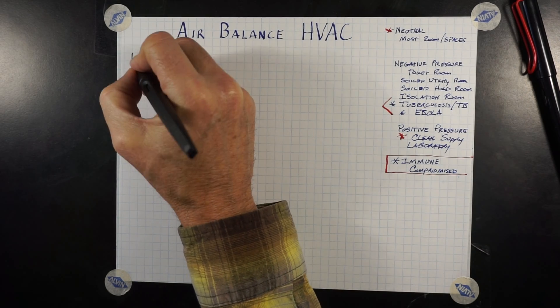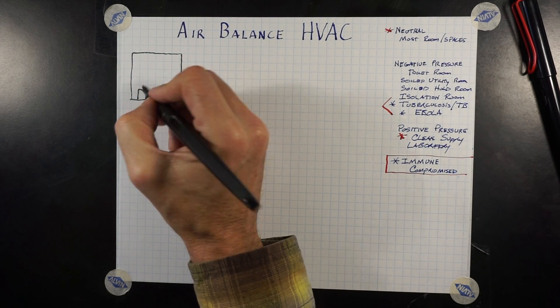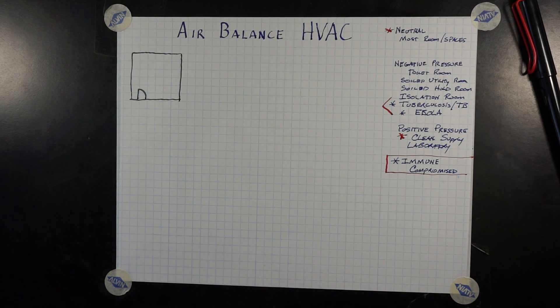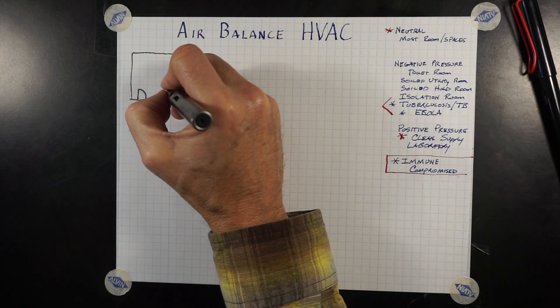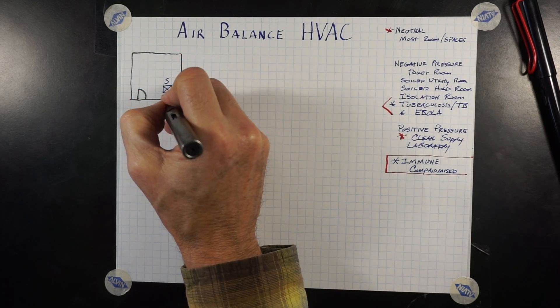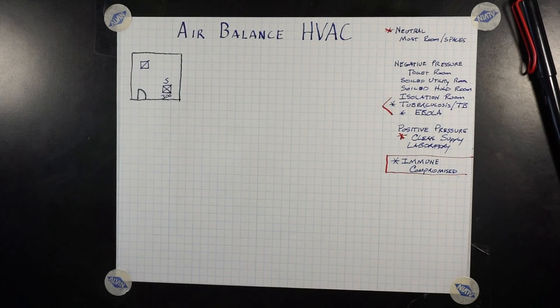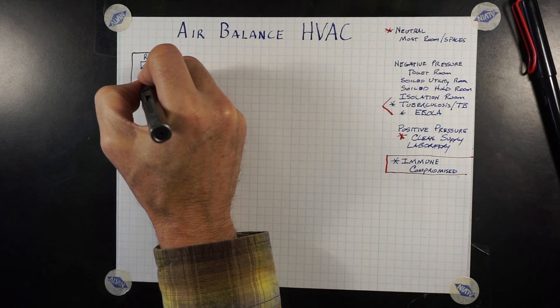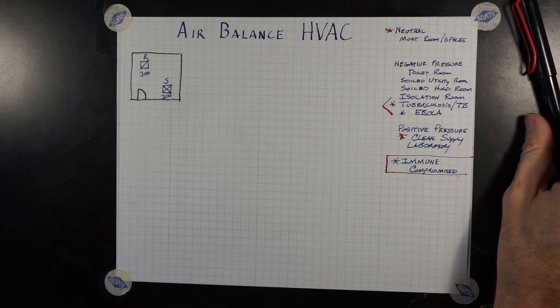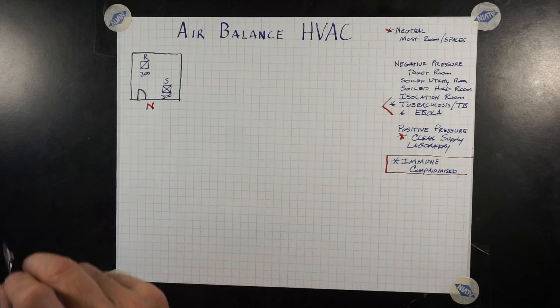Let's draw a room. And in that room, we have a supply duct shown here with an S and an X through it of 300 cubic feet per minute of air. Let's draw a return air duct. Typically it's one line through it, drawn here. Let's put an R here for return, and it's 300 cubic feet of air leaving the room. So the amount of air going in and the amount of air coming out are the same. That room is considered neutral.